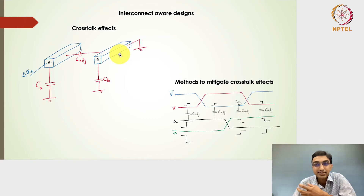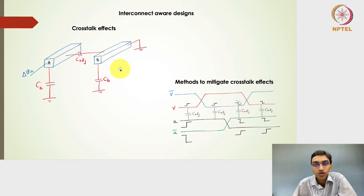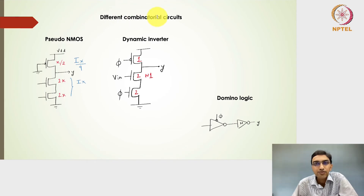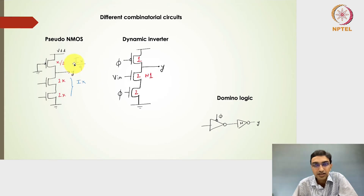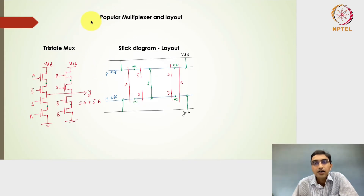Once we have the RC circuit for an interconnect, we should be able to understand the power or energy dissipated by the VDD rail, and the effect of the interconnect on overall logic design performance. There are also ways to mitigate crosstalk effects, which we will cover in a lecture. We will also look into different combinatorial circuits like the pseudo-NMOS dynamic inverter and domino logic, analyzing their benefits especially in terms of delay.